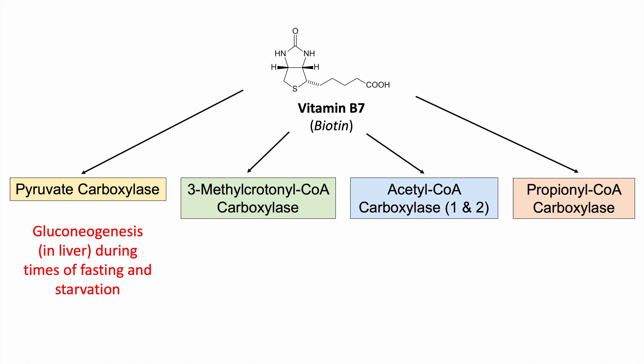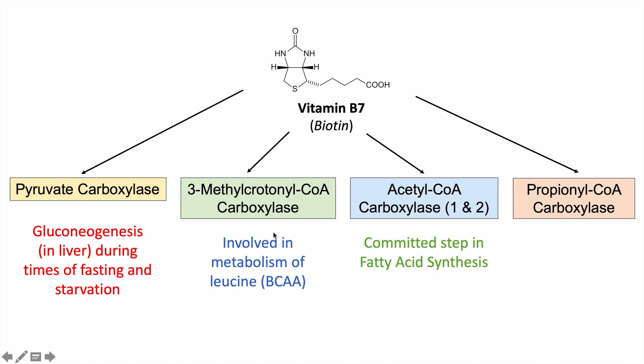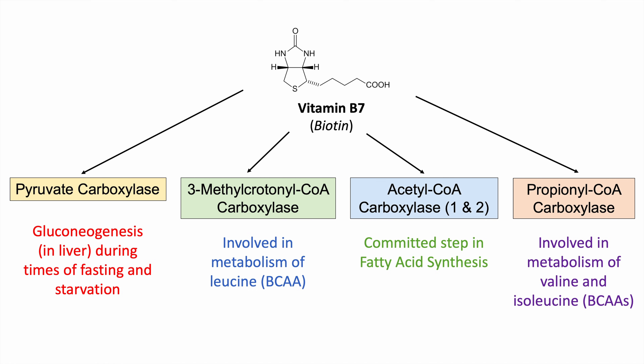With regards to 3-methylcrotonyl-CoA carboxylase, this is involved in metabolism of leucine, which is one of the branched chain amino acids — leucine, isoleucine, and valine. And we need biotin with regards to this carboxylase. Acetyl-CoA carboxylase 1 and 2 are the committed steps in fatty acid synthesis, so biotin plays a role with these enzymes as well. And propionyl-CoA carboxylase is involved in the metabolism of valine and isoleucine — the other two branched chain amino acids.